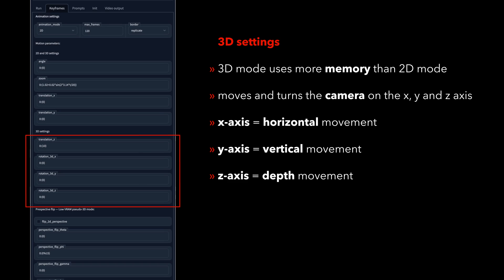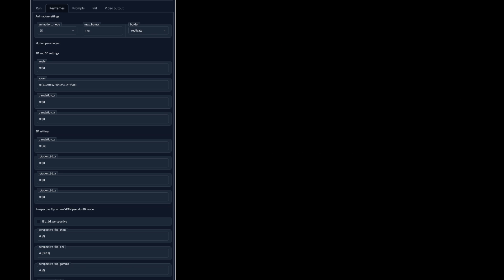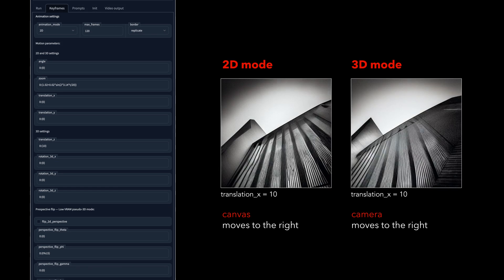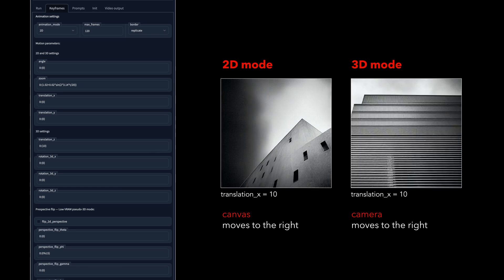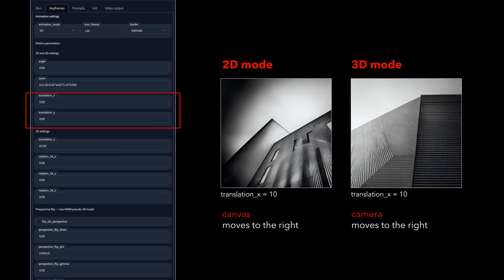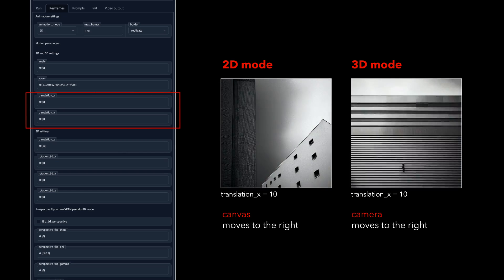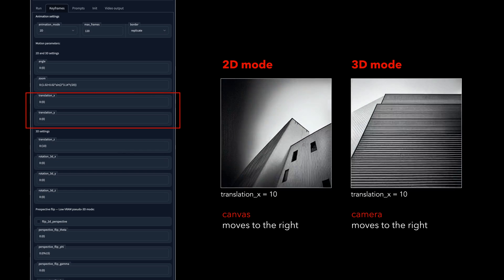As we already saw in the pseudo 3D mode, we are also controlling the camera movement in the real 3D mode. This mode is using more VRAM than 2D, so be aware trying it with a lower-end graphics card. In 3D mode we can use the translation x and y parameters from the 2D mode to move the camera on the axis as we saw before. But this time we are moving the camera, so the values are opposed to the ones in 2D mode.